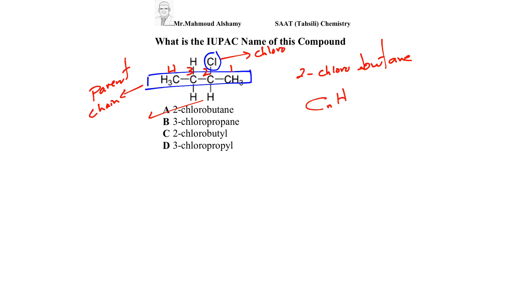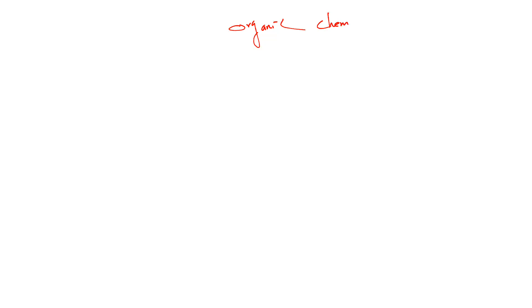Just keep in mind the general formula of alkane is CₙH₂ₙ₊₂. Let's also cover some basics about organic chemistry. Organic chemistry is also called hydrocarbon chemistry or carbon chemistry. It essentially consists of hydrogen and carbon as the main components.